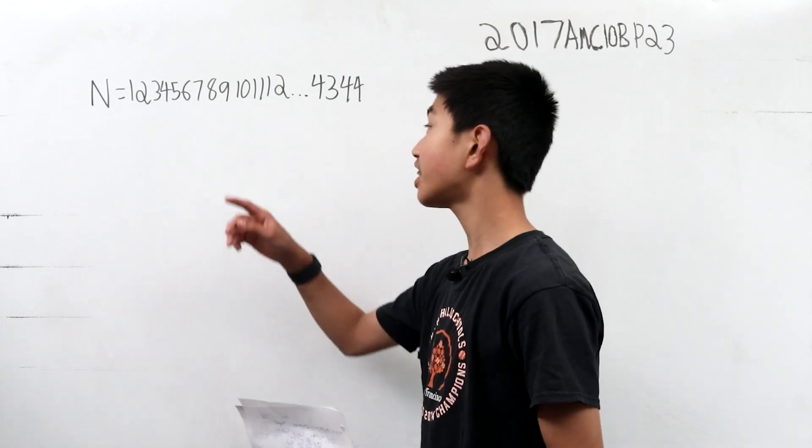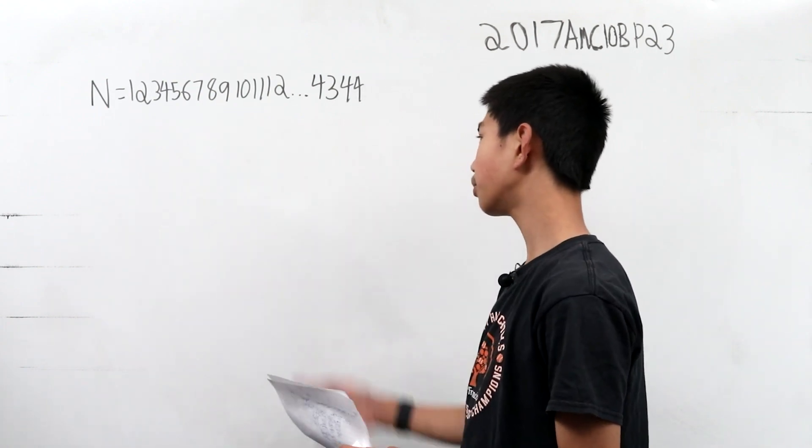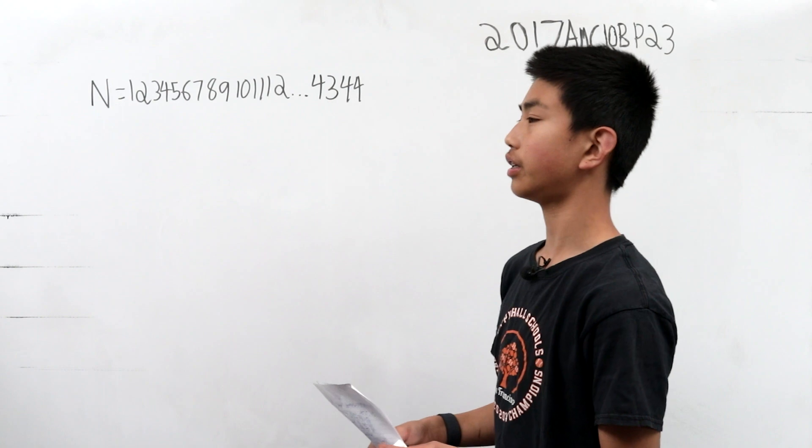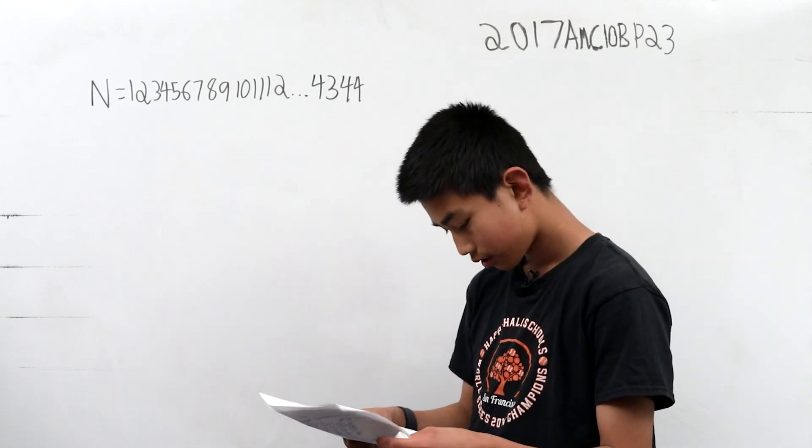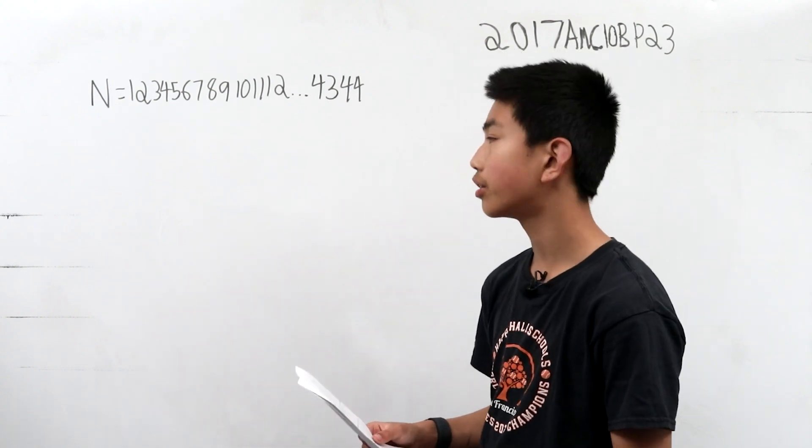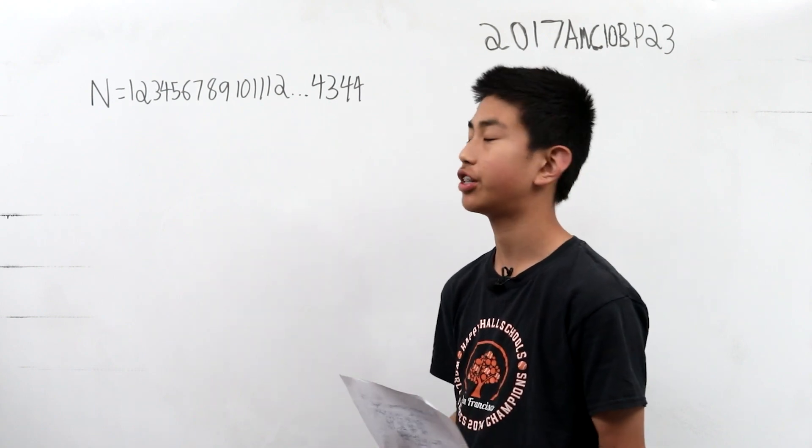So we have this insanely huge number here and we want to find it when it's mod 45. And we want the remainder. This is truly a modular arithmetic problem.